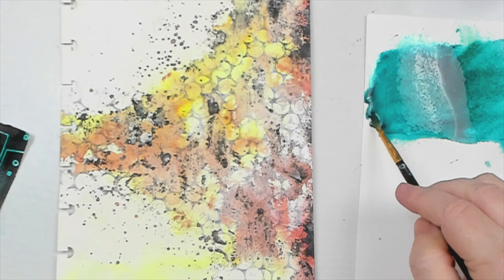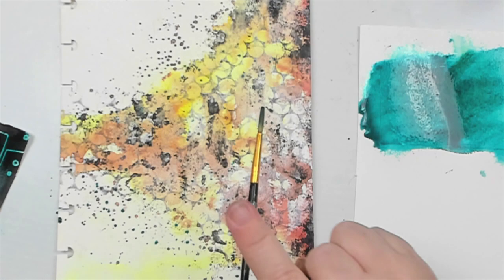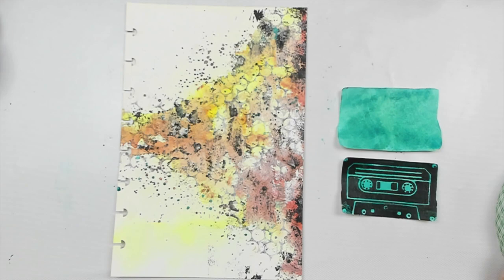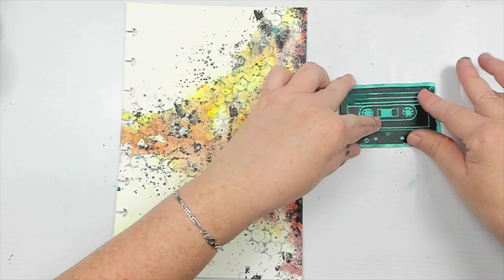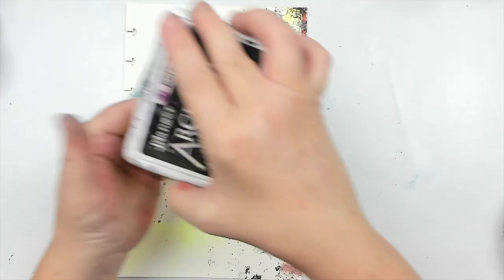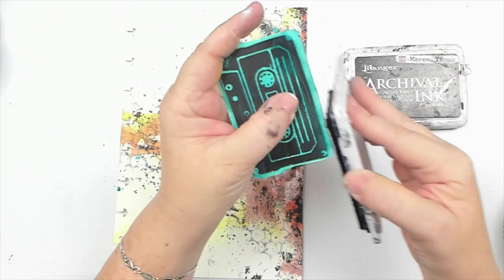I took some 3D foam tape and taped the cassette to its matte, so that way it would create a really nice 3D shape, and then I glued that to my background as my focal point.